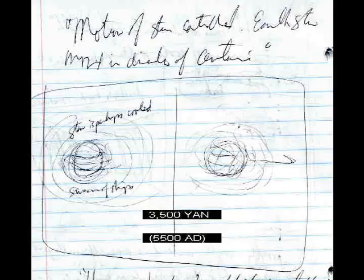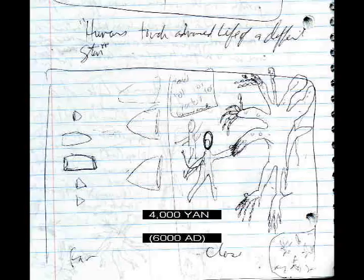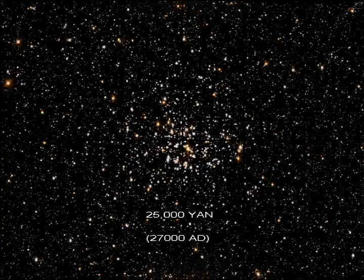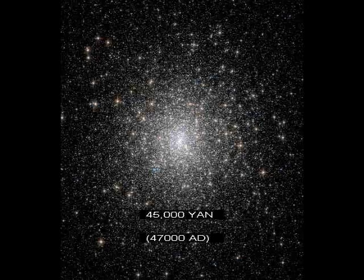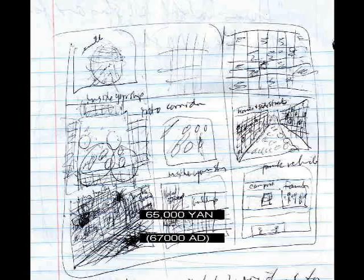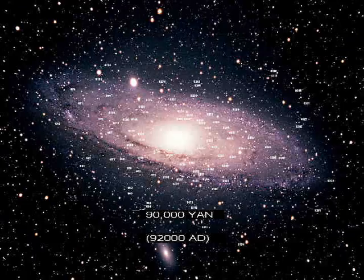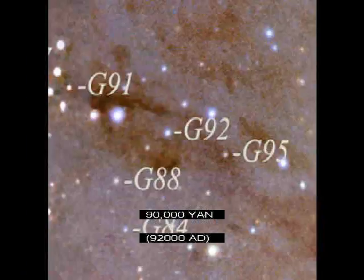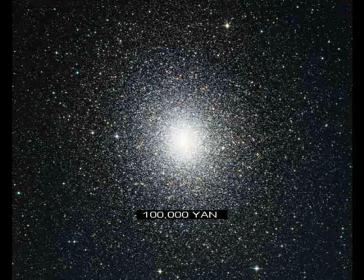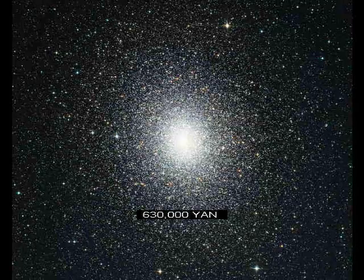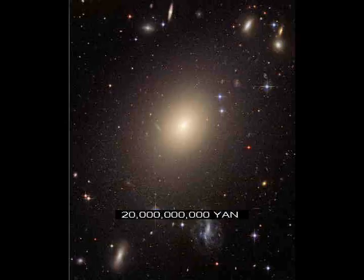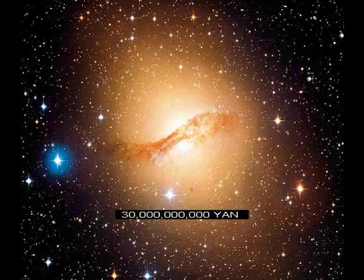Star of Earth moved in direction of Centauri. Humans touch advanced life of a different star. 1 trillion humans. Humans inhabit 100 stars and form a globular cluster of 10 stars. Humans inhabit 1,000 stars and form a globular cluster of 100 stars. Earth is completely filled with living objects. Humans inhabit 10,000 stars and form a globular cluster of 1,000 stars. Human-made globular cluster of 10,000 stars leaves the plane of the Milky Way galaxy. All planets of the star of Earth consumed. The star of Earth is consumed. 10 to the power of 100 humans. The Milky Way is a globular galaxy. Milky Way globular galaxy integrates with Magellanic cloud galaxies.